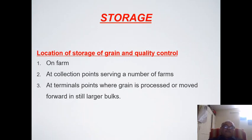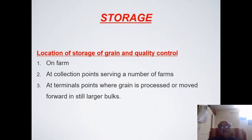Regarding the locations at which food is stored: the first is at farm level; the second is at collection points serving a number of farms, such as godowns; third is at central hubs where grain is processed or moved forward in larger quantities to processing industries, and after processing and packaging it moves further to dealers and sub-dealers.